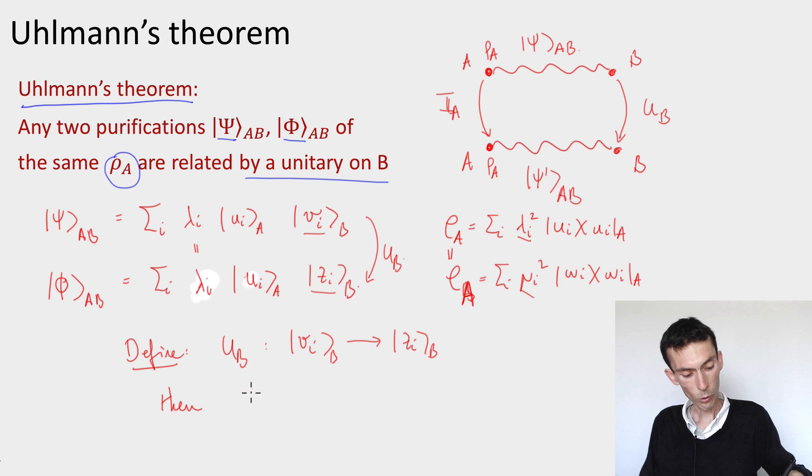And then U does exactly what we want, meaning if we act as the identity on A and as U on B, this is going to map our first state ψ_AB to the state φ_AB.